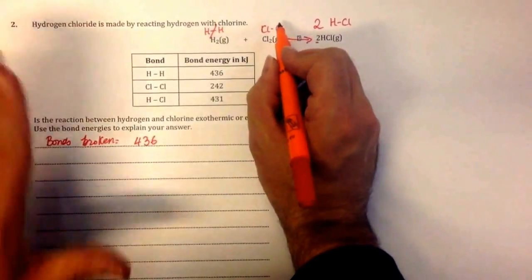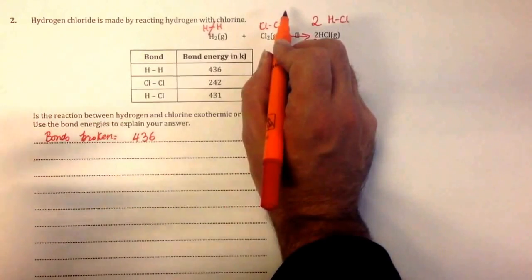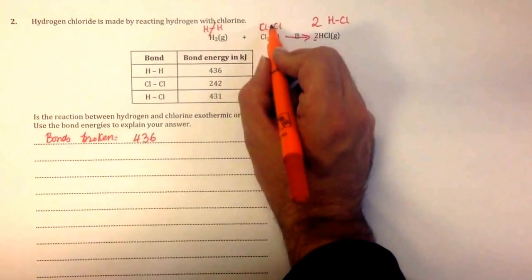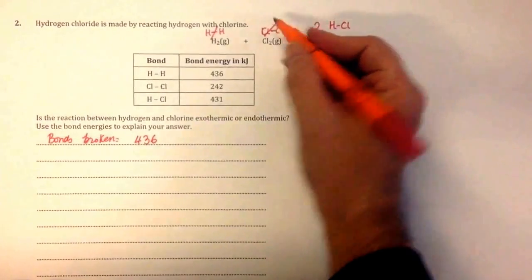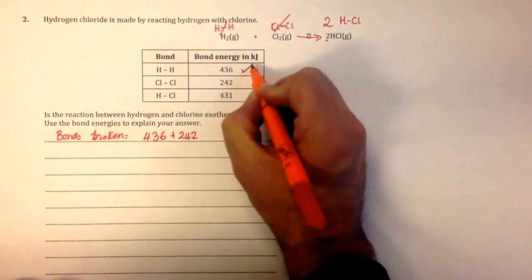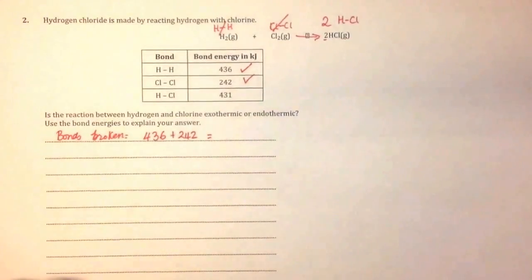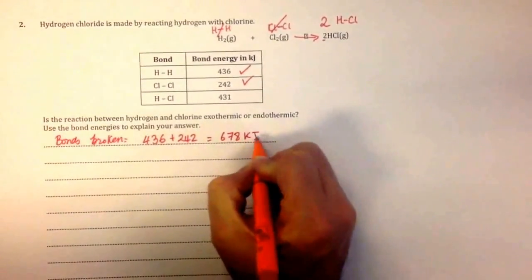We then have on the left-hand side - remember, things on the left-hand side are the bonds we need to break - we have a chlorine-chlorine bond. Put a line through that to remind myself to count it, and that's plus 242. If we add those two things together, you get 678 kilojoules.